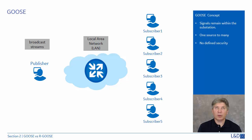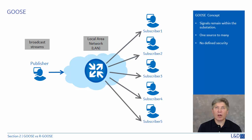In addition, GOOSE communication was confined within the substation — there were no external connections to the outside world. As such, no real security was needed. The GOOSE messages were published using a broadcast approach on a local area network, where one source was available to many.